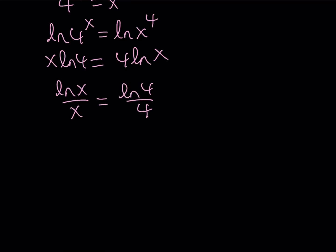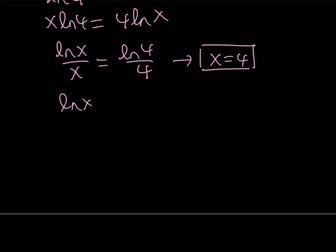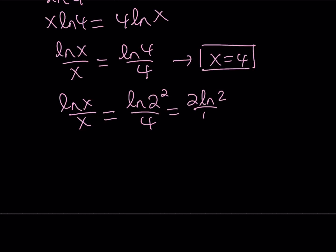This equation tells us that x equals 4 is an obvious solution, because if you replace x with 4 it works. But is that the only solution? The answer is no. Because ln 4 can be simplified: ln 4 is ln 2 squared over 4, which is 2 ln 2 over 4, and simplifying gives ln 2 over 2. Which means x equals 2 is another solution.